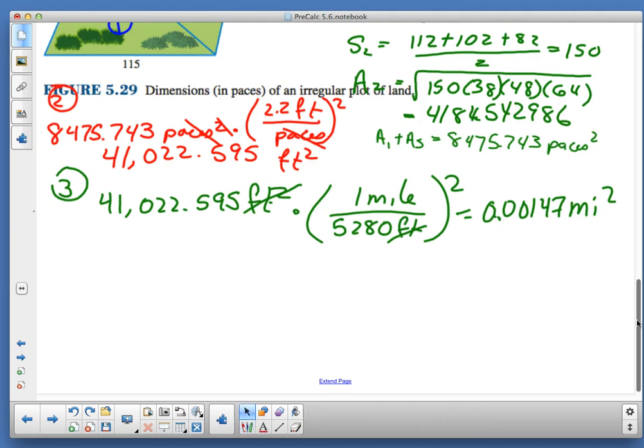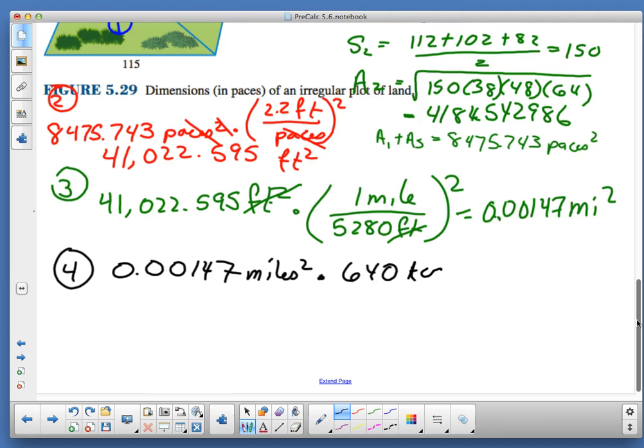In step 4, there are 640 acres in a square mile. We are asked to take our square miles and multiply that by 640 acres per mile squared, so now it's going to be in acres. Now we are at 0.942 acres.